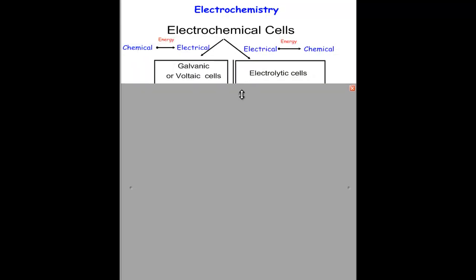Electrochemistry involves electrochemical cells. Two types of electrochemical cells, the galvanic and the electrolytic.